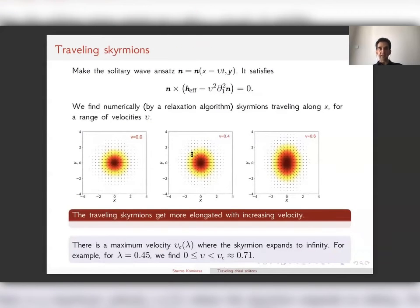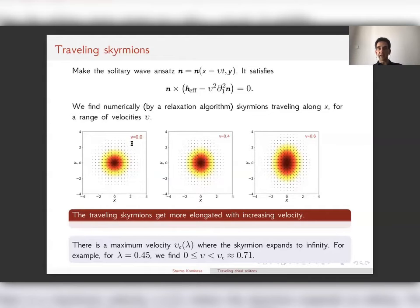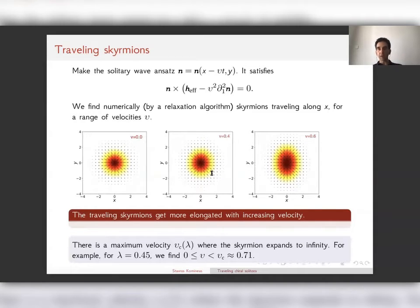Let us proceed to a similar study for the skyrmion. We assume a propagating skyrmion with velocity v in the horizontal direction and substitute the traveling wave ansatz into the equation, solving numerically by a relaxation algorithm. We find propagating skyrmions: compared to a static skyrmion, one propagating at velocity 0.4 is elongated in the y direction, and at higher velocity it is more elongated — the skyrmion expands both in the x direction (direction of propagation) and the y direction (perpendicular).